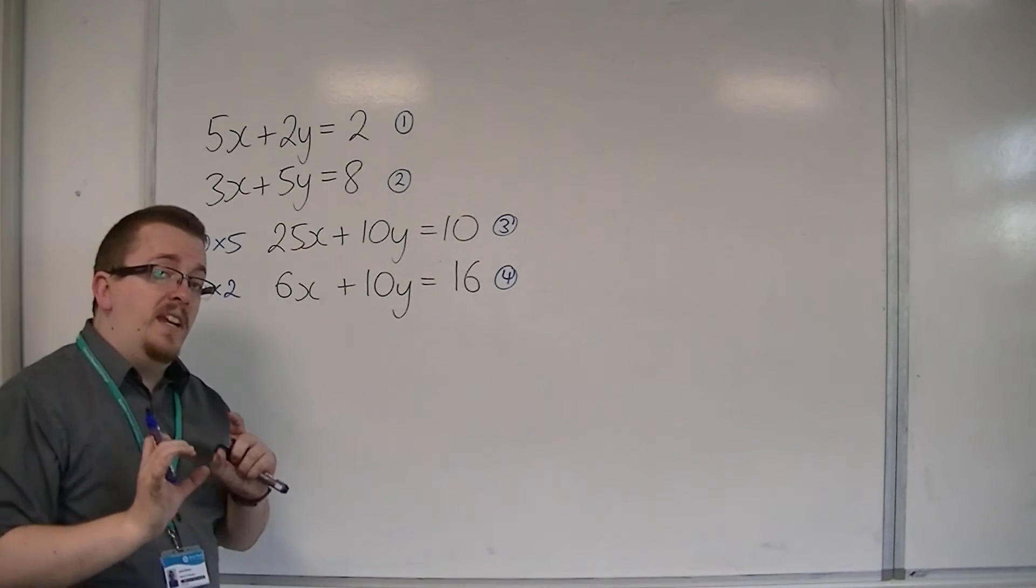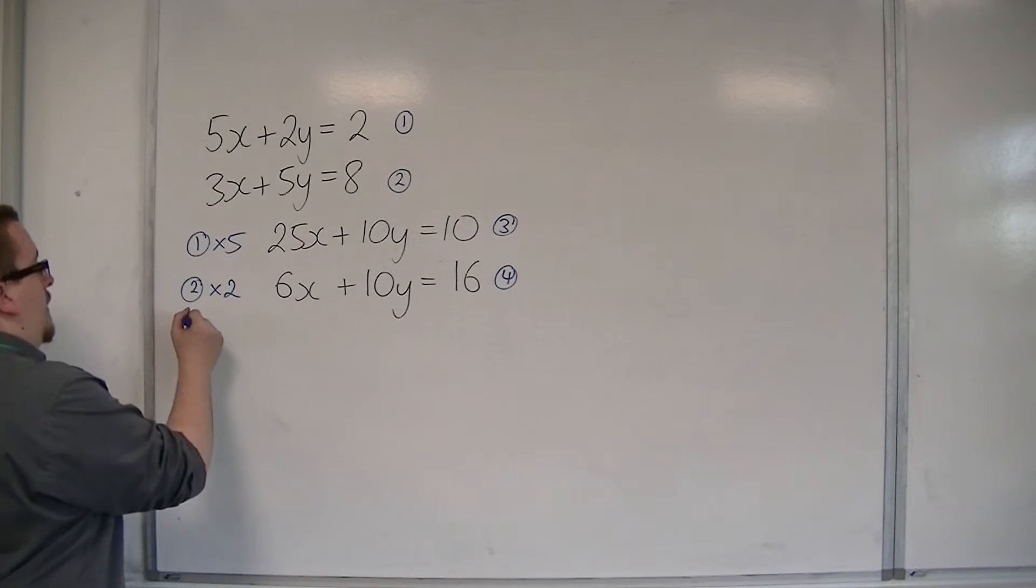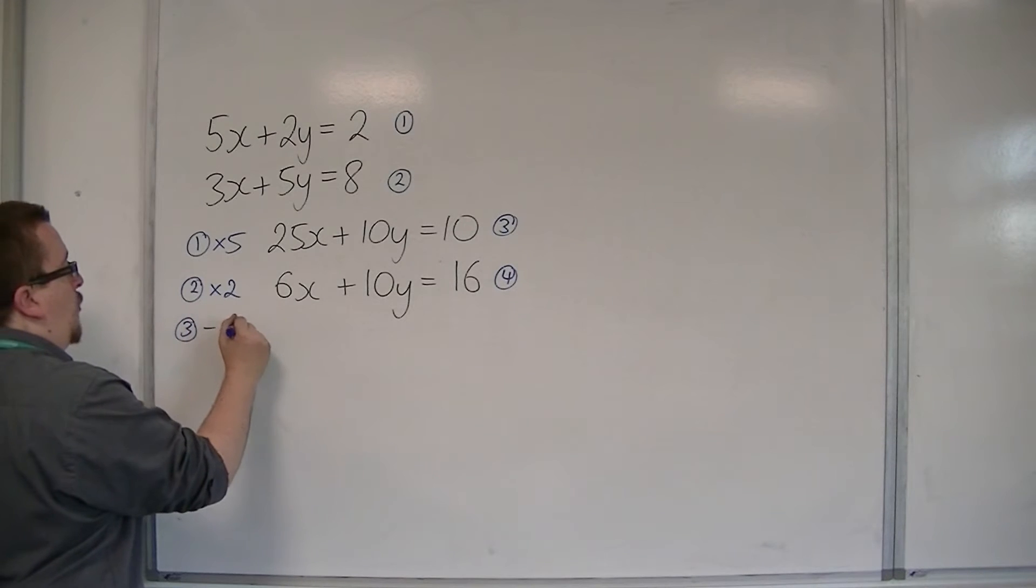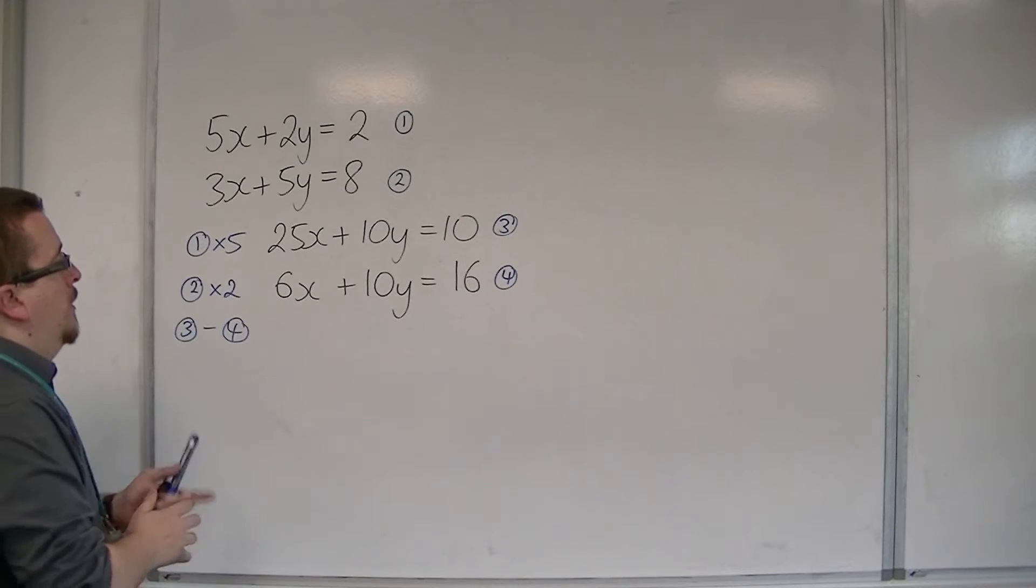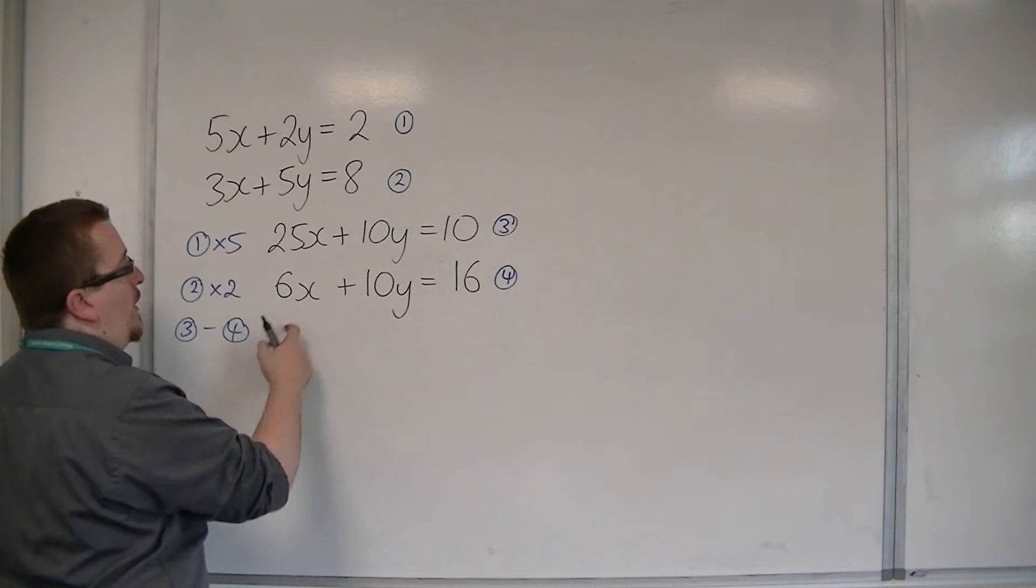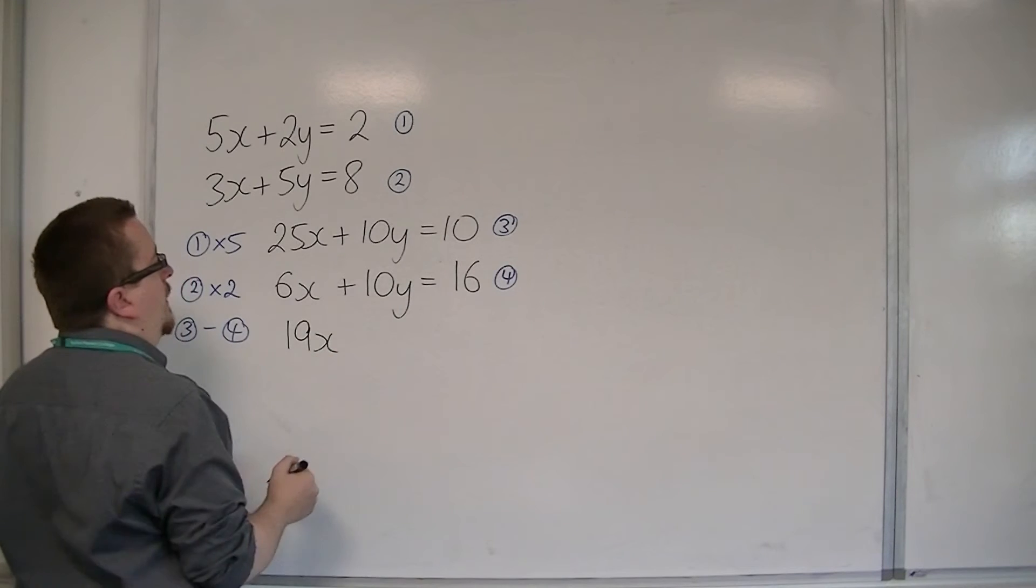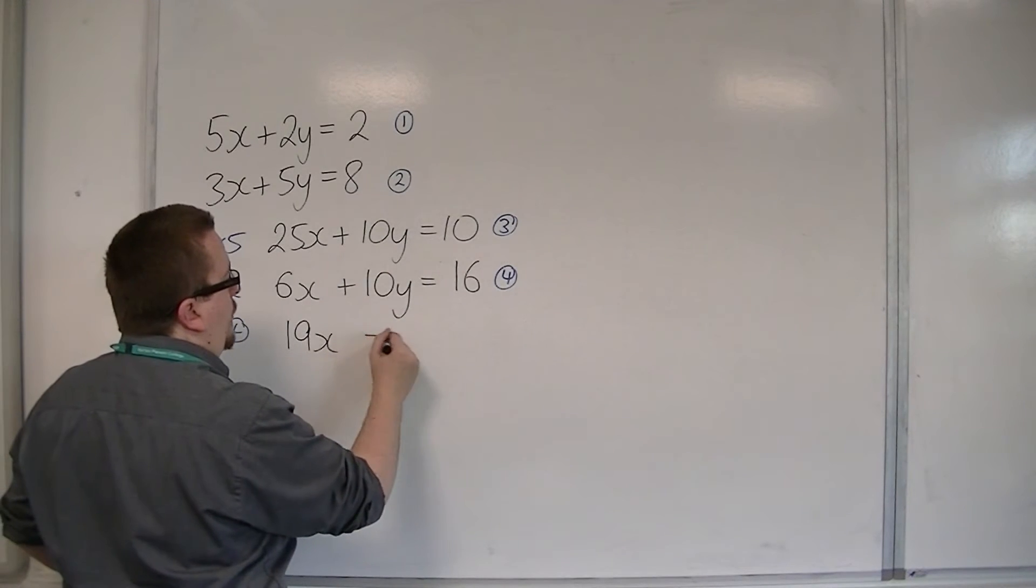Now I'm in a position where I can eliminate the y's by subtracting equation 4 from equation 3. So, 3 take away 4. We're going to get 25x take away 6x is 19x. And the 10y's cancel.